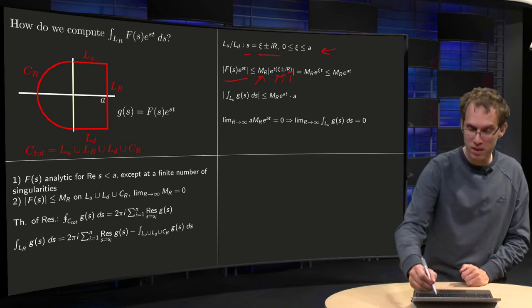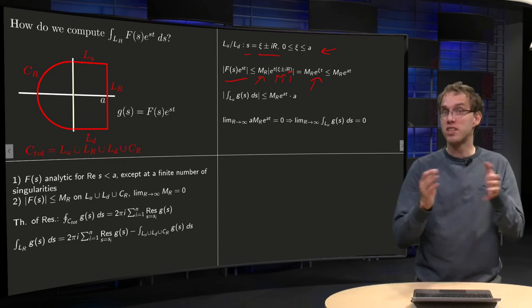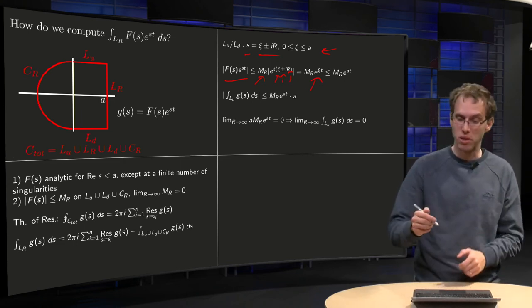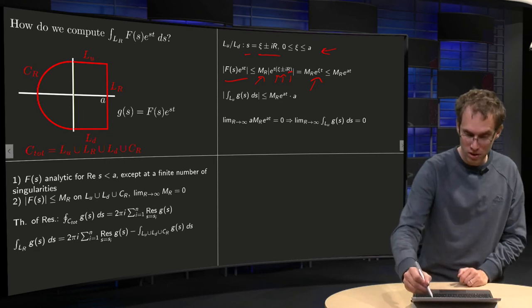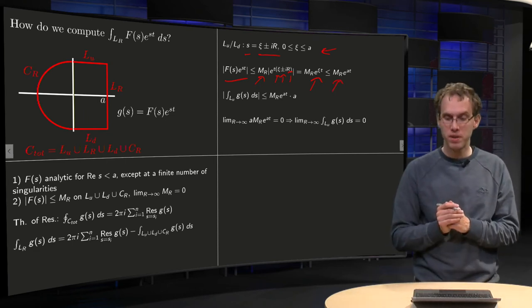We are only left with e^(ξ·t), because ξ is at most a, and a is some constant, so that doesn't harm us, which yields us M_R times e^(at).